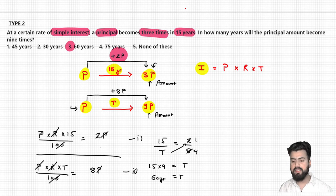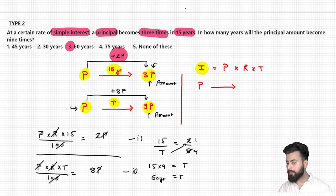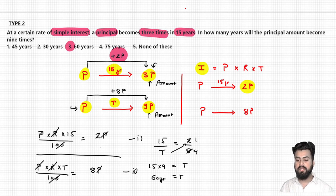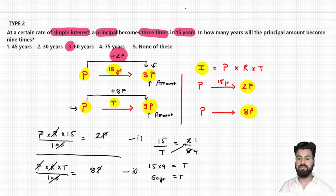This is the conventional way of solving the question. Now I want you to focus on how you could solve this using a visual approach. What data were we given? A principal P changes to 3P — but 3P is the value of amount, so I'll directly write the value of interest: 2P in 15 years. In the second case, I want to earn an interest of 8P on the same principal, to change P to 9P. So in how many years will this happen? That is what I want to calculate.